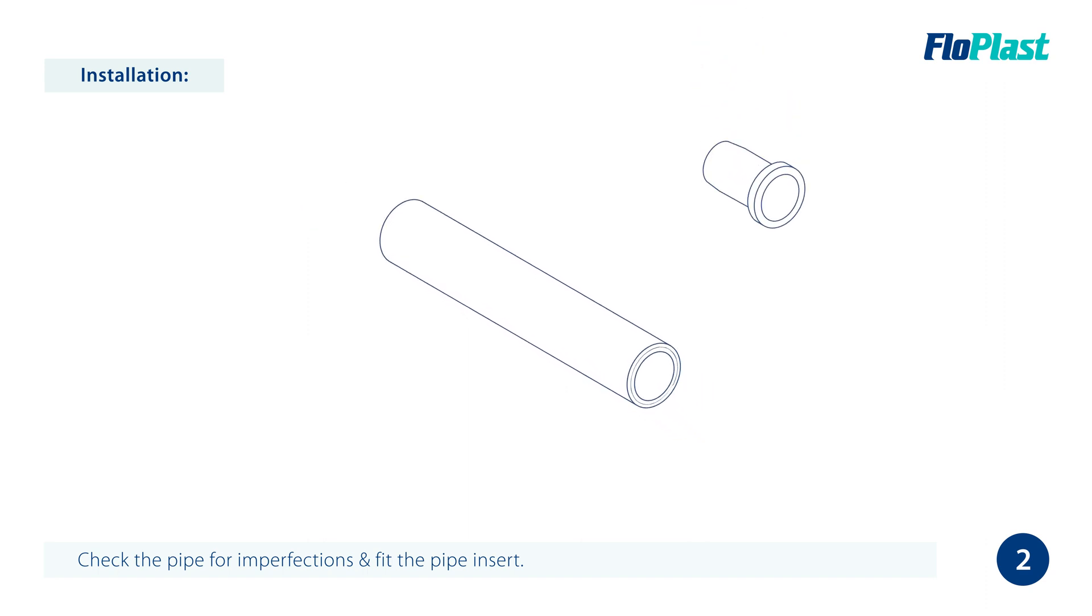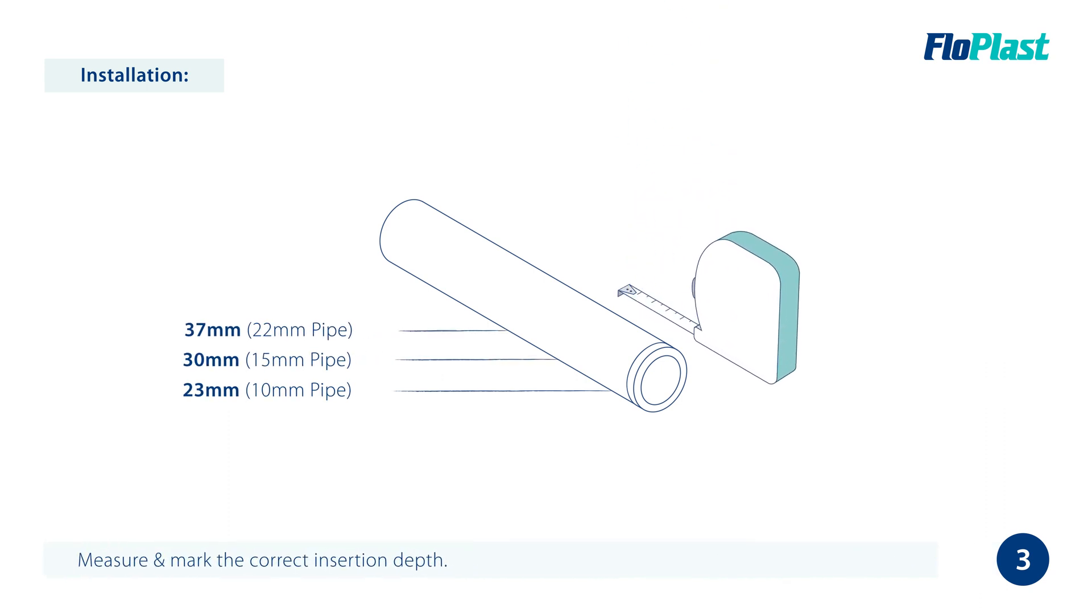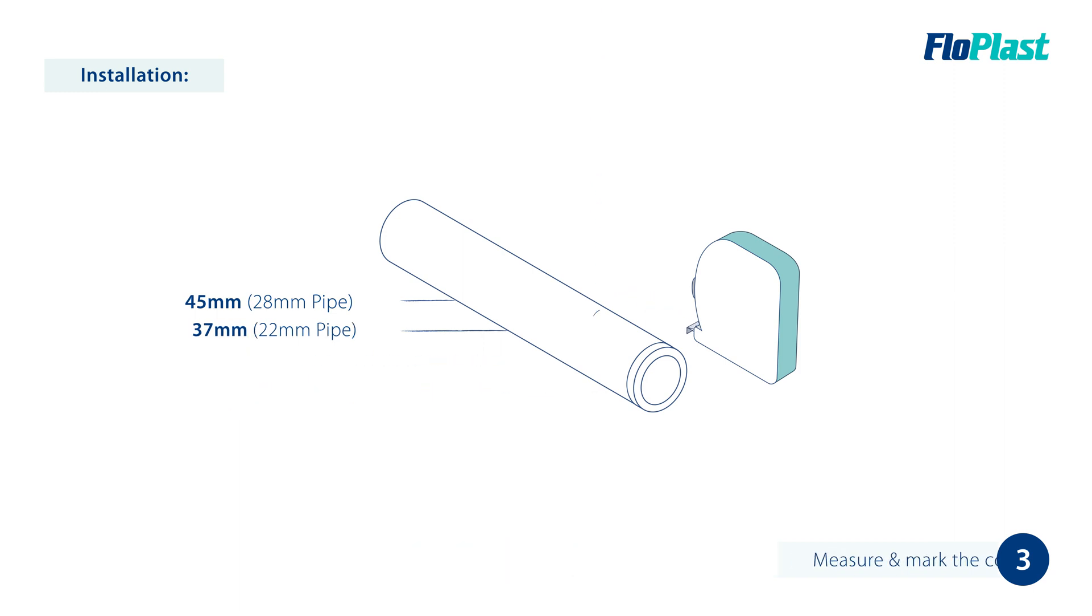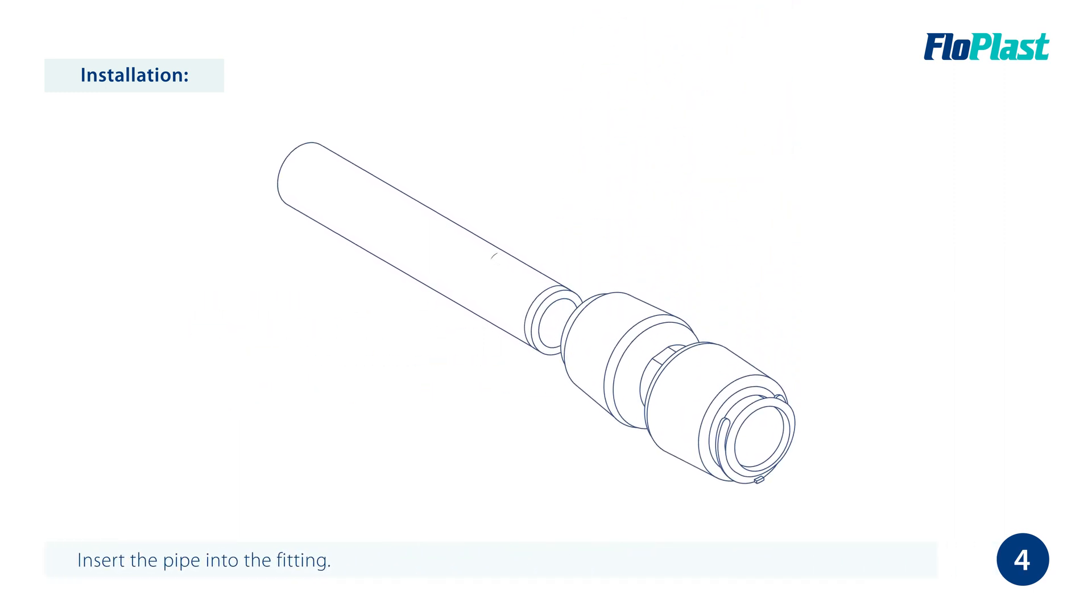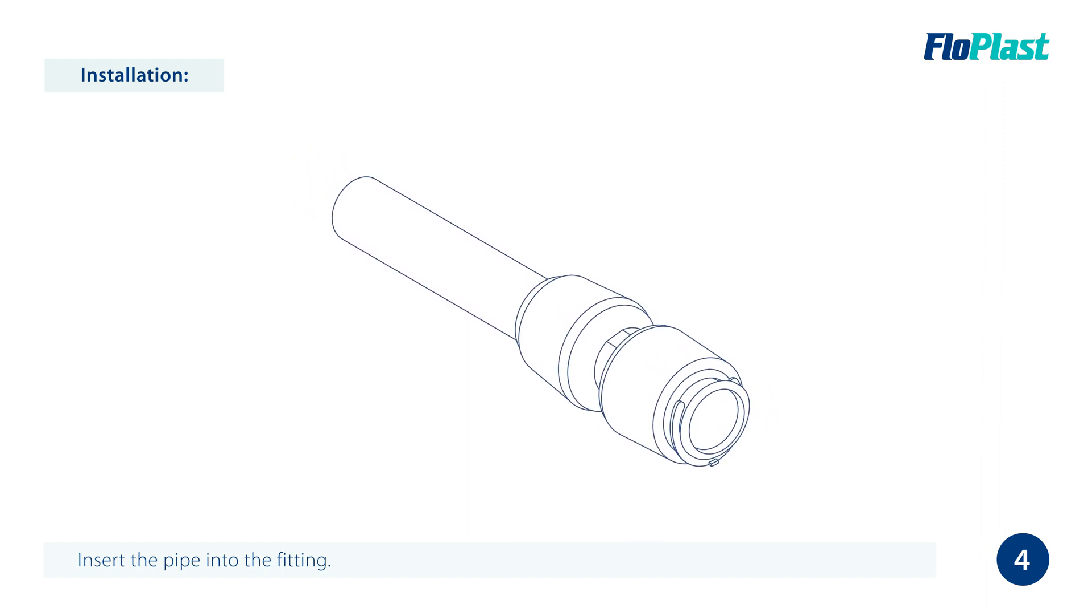Fit the pipe insert into the pipe ensuring it is fully inserted. Next, measure and mark the correct insertion depth on the pipe. Insert the pipe into the fitting ensuring it passes through the o-ring until it reaches the stop point and correct insertion depth. Check the assembly is secure by pulling the pipe away from the fitting.